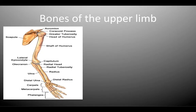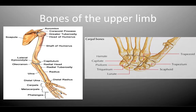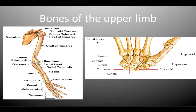So let's have a quick look at the bones of the upper limb. We have the humerus in the upper arm, and we have the ulna and the radius in the forearm, and the carpals, the metacarpals and the phalanges in the hand. If we have a closer look at the carpal bones, we have eight carpal bones: the trapezoid, the trapezium, the scaphoid, the lunate, the pisiform, the triquetrum, the capitate, and the hamate.